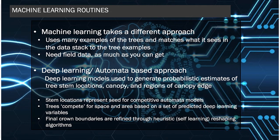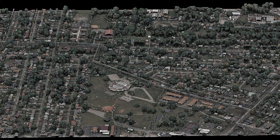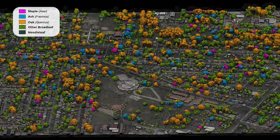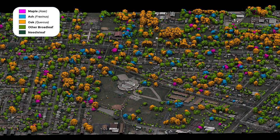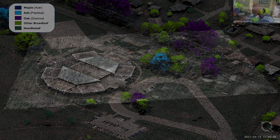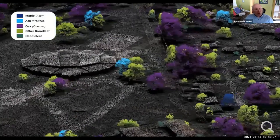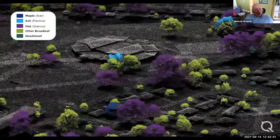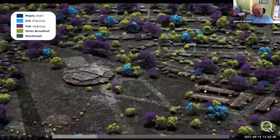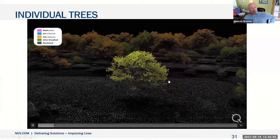We're able to create final crown boundaries using this self-learning algorithm. Here's an example from an area in Louisville, a project we worked on to look at the health value of trees, looking particularly for individual species. We identify the trees and identify the species of the trees using three-dimensional representation. You can start to see the level of detail we're getting on those individual trees. From an urban tree manager's perspective, we now know the size, shape, status, and health of those individual trees.